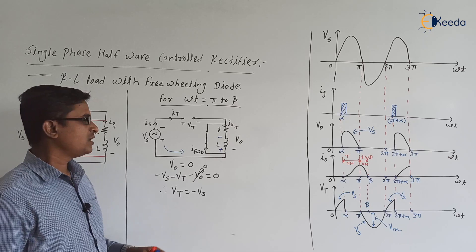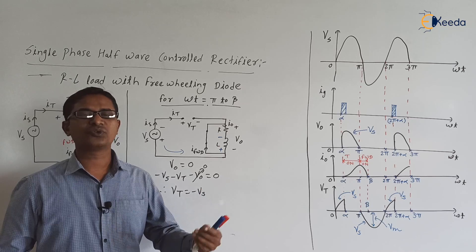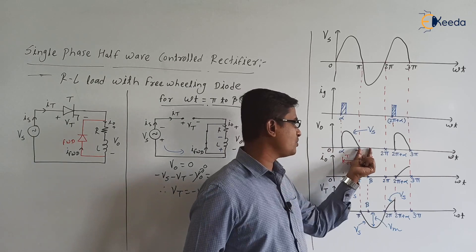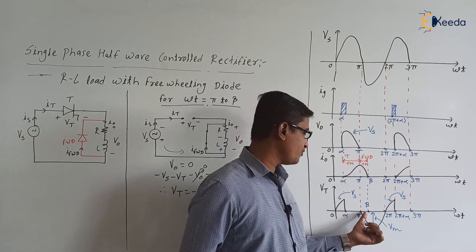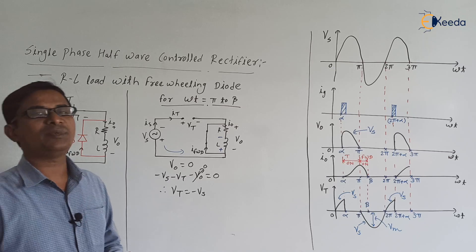Since the inductor is releasing energy, as time increases the stored energy decreases and the current I0 decreases. From ωt = π to β: V0 = 0, I0 is decreasing, the freewheeling diode is on, and Vt = −Vs. At β, the inductor has fully released its energy. β is the extinction angle.